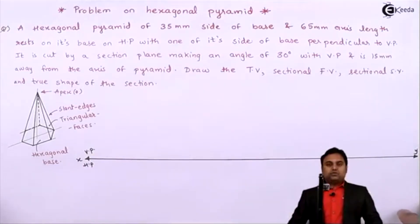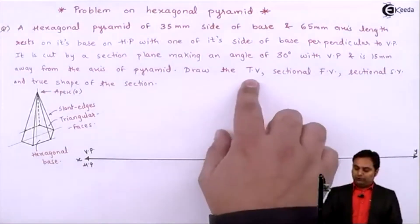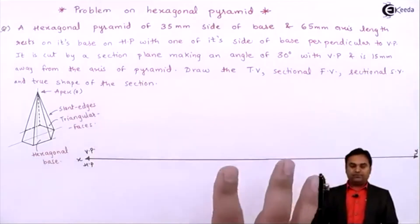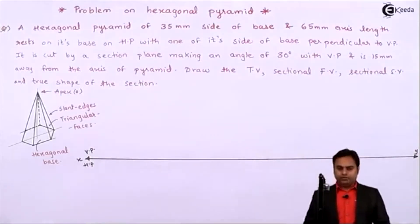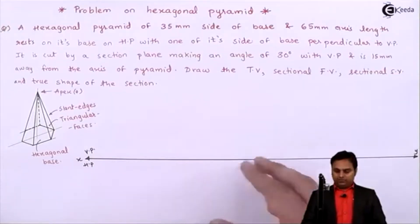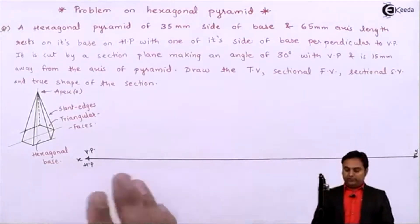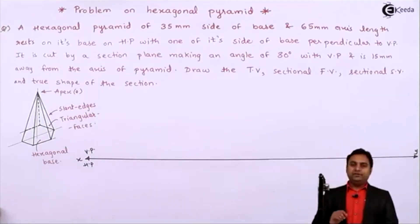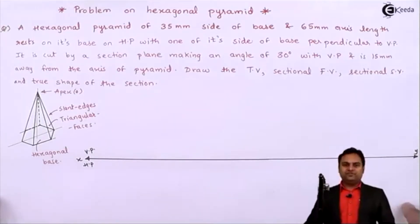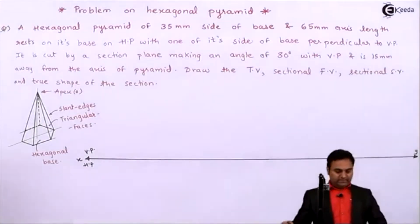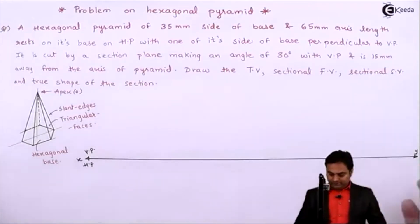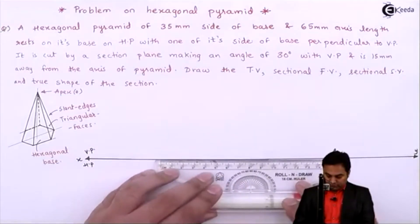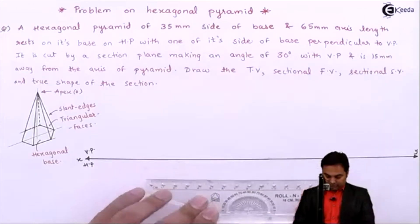In this question we have to draw the top view, sectional front view, sectional side view, and true shape of the section. It is better to start with the top view from the middle, because on both sides — one side will be the side view and on the other side the true shape of the section. So I'll start drawing from the middle, which is the hexagon we are going to see from the top.